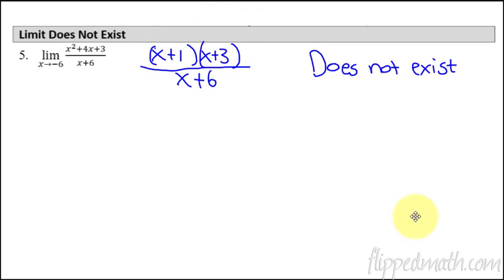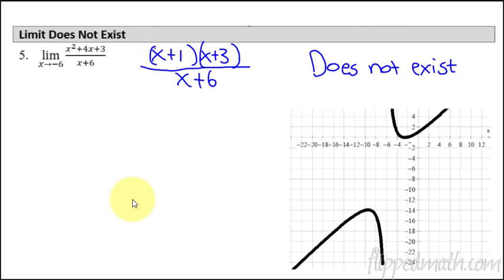What in the world does a graph of something like this look like? You don't have to know the graph. You just have to know the algebraic manipulation. But this is what it would look like. You'd have this vertical asymptote right here at x equals negative six. And so the left side is going way down here to negative infinity. The right side of negative six is going up to positive infinity. And so the left and right side are not the same thing. Therefore, the limit does not exist. Again, you don't have to know the graphs. It's the algebraic manipulation that we're practicing. I just showed you the graphs to maybe see if it'll help you understand what's going on.